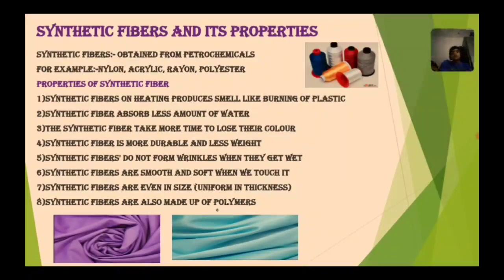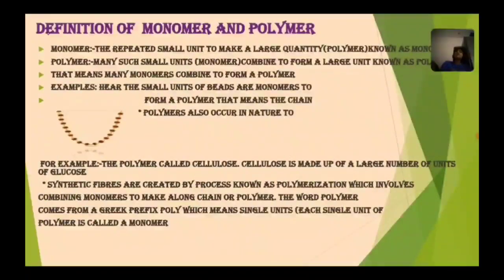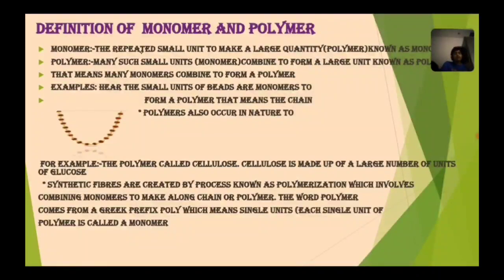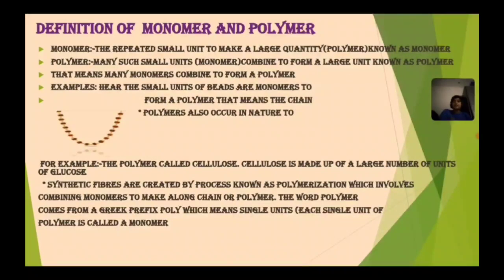We heard about polymers, so let us know about polymers. Before knowing the definition of polymer, let us know about the small concept monomer. The repeated small unit used to make a large quantity polymer is known as monomer. For example, when many bricks combine to form a building, one brick acts as the monomer and the building acts as the polymer. Many such small units like monomers combine to form a large unit known as polymer — many monomers combine to form a polymer.